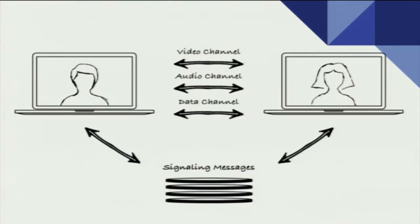This is the basic diagram. Client 1 wants to talk to Client 2. It sets up an offer and sends it through the server. Client 2 processes the offer, sends an answer, and Client 1 also processes the answer. Now all the data that will be sent will be peer-to-peer — no need for the server. So peer-to-peer video, audio, or data.